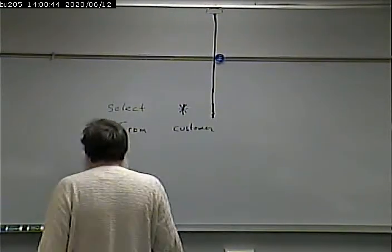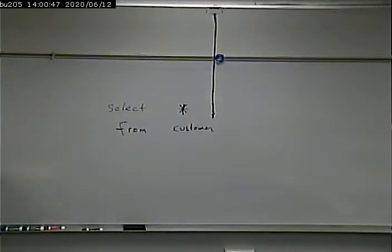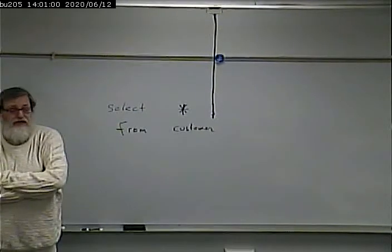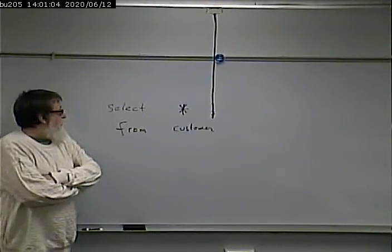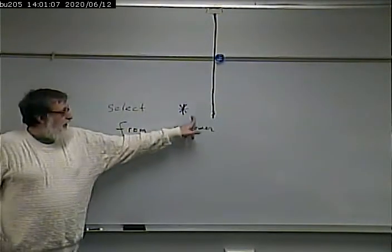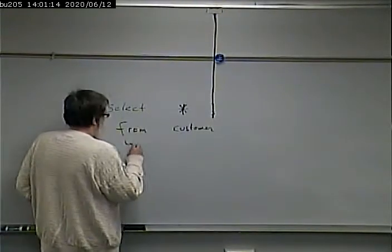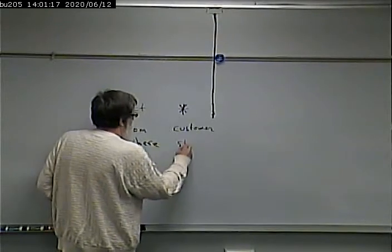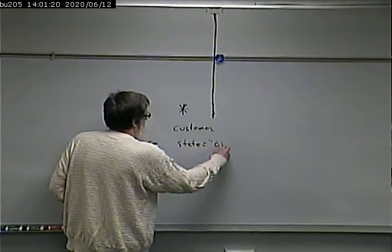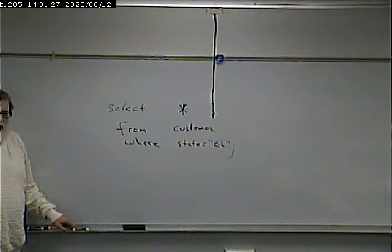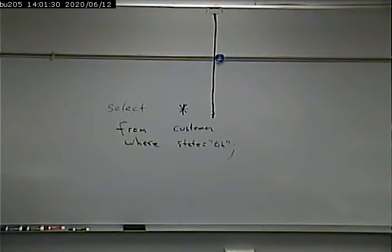If I say SELECT star FROM customer, how many customers will I get? I'll get them all, because I haven't specified which customers I want. So we can select columns by putting a list or an asterisk. And the way that we select rows is by adding a WHERE clause. For example, WHERE state equals Ohio — that way we're filtering out and only showing those customers that are in the state of Ohio.